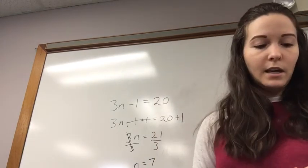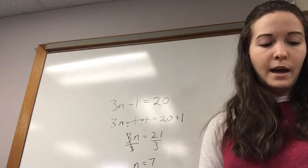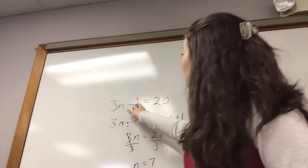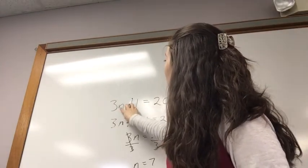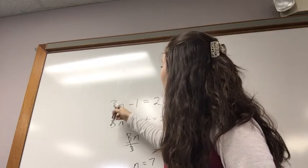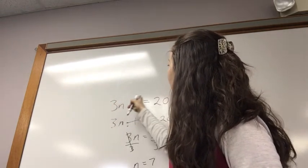And we can check our problem by putting our numbers back into it. We could put it into our original problem, replace n with 7. So, then we would have something like 3 times 7 minus 1 equals 20.